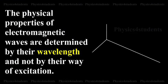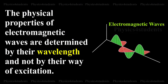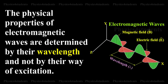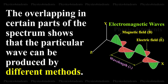The physical properties of electromagnetic waves are determined by their wavelength and not by their method of excitation. The overlapping in certain parts of the spectrum shows that the particular wave can be produced by different methods.